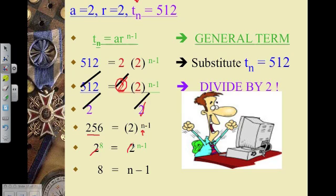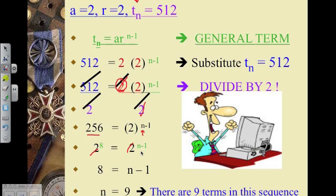Once the left-hand side and the right-hand side both have a common base, we can simply eliminate my common base and just deal with my exponents. So 8 is equal to n minus 1. Move all the terms to one side and I can solve for n. n is equal to 9. Therefore, there are 9 terms in this sequence.